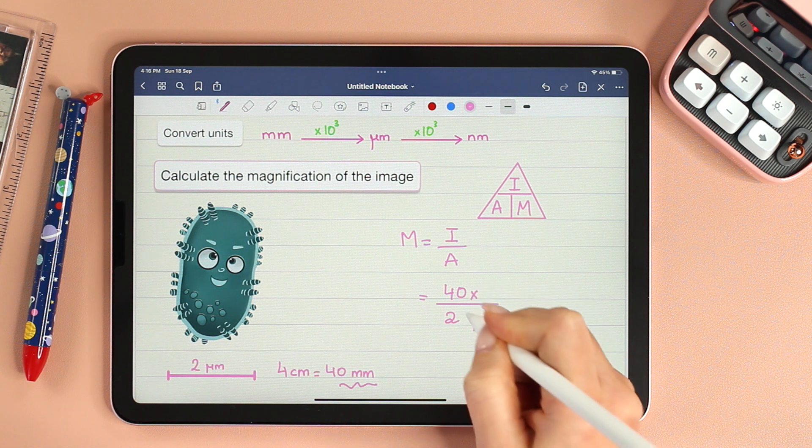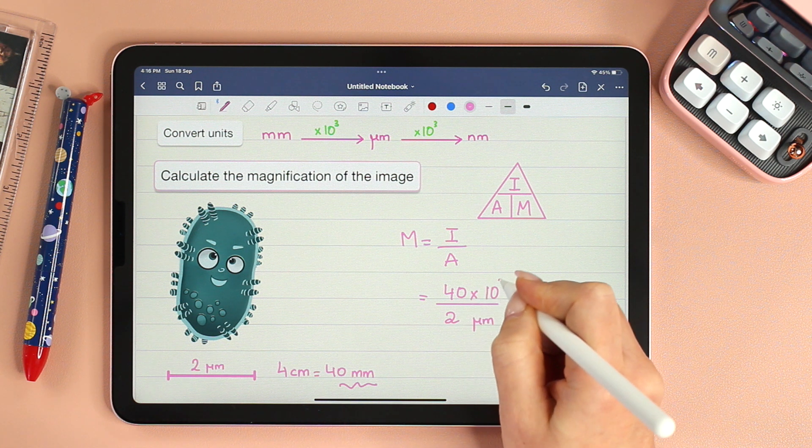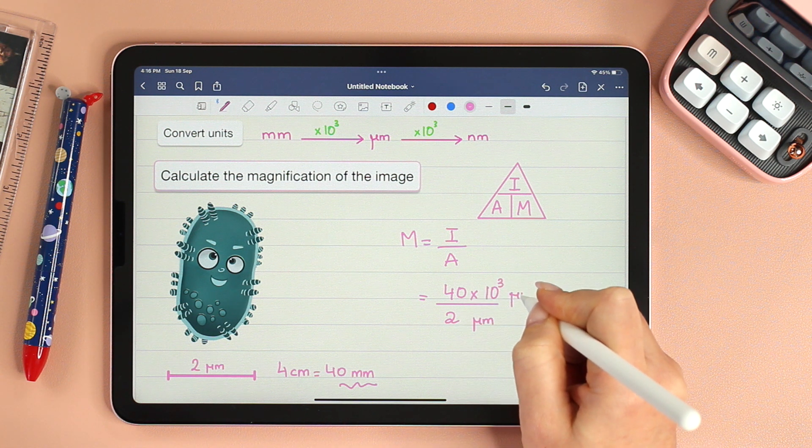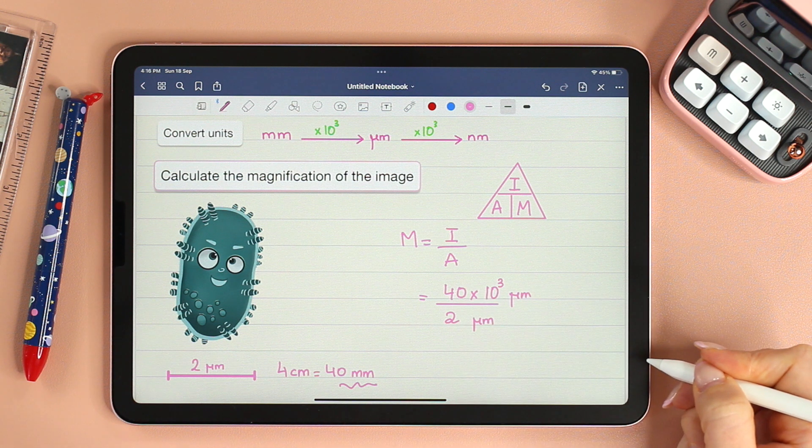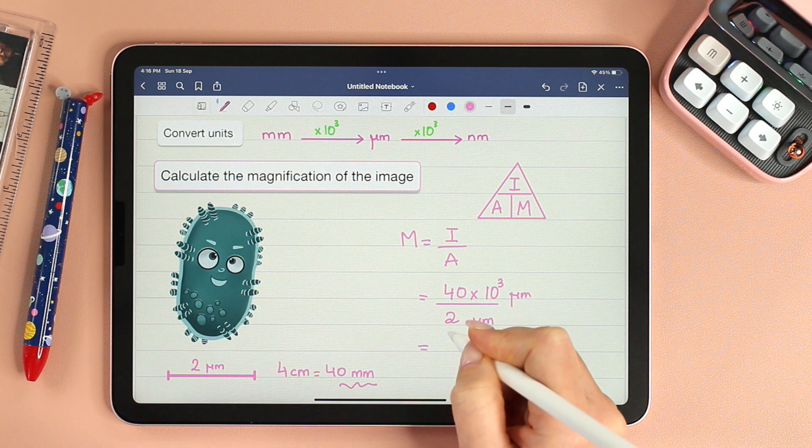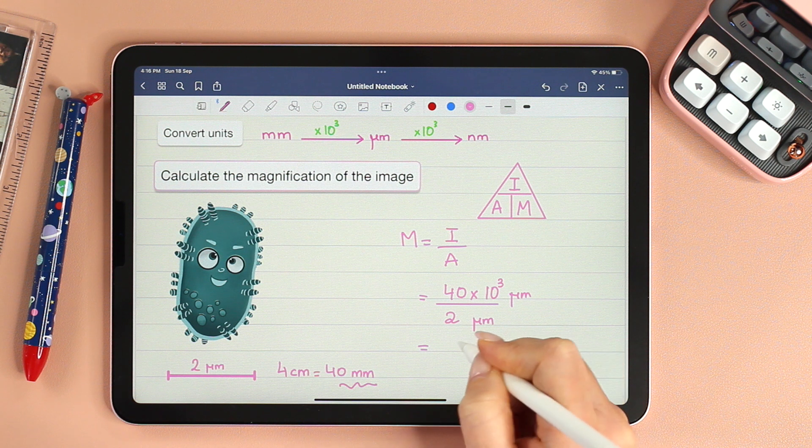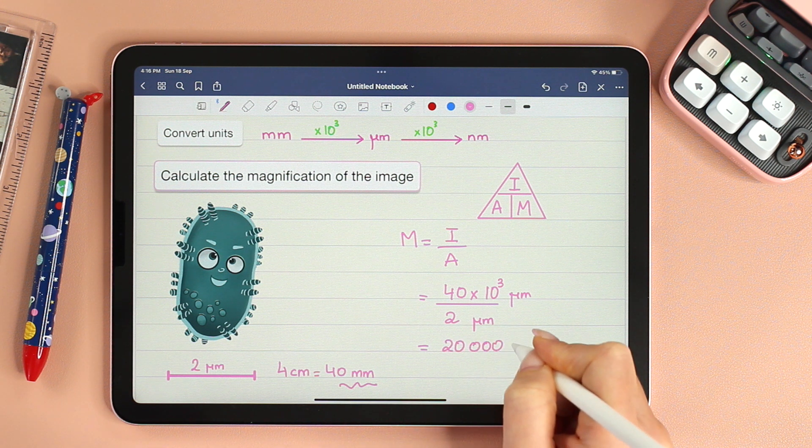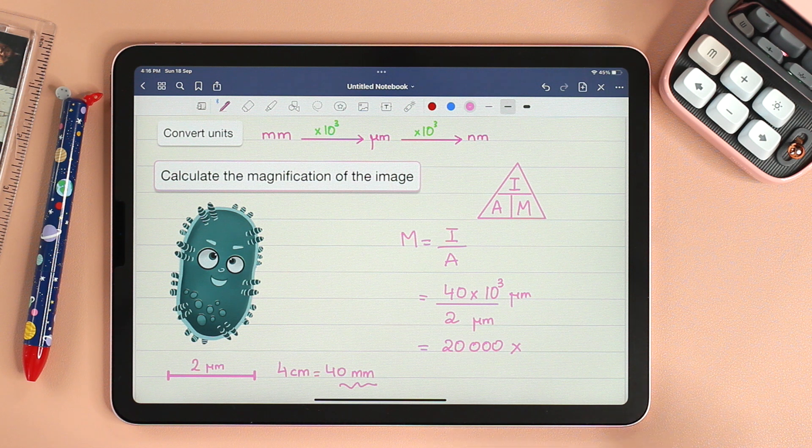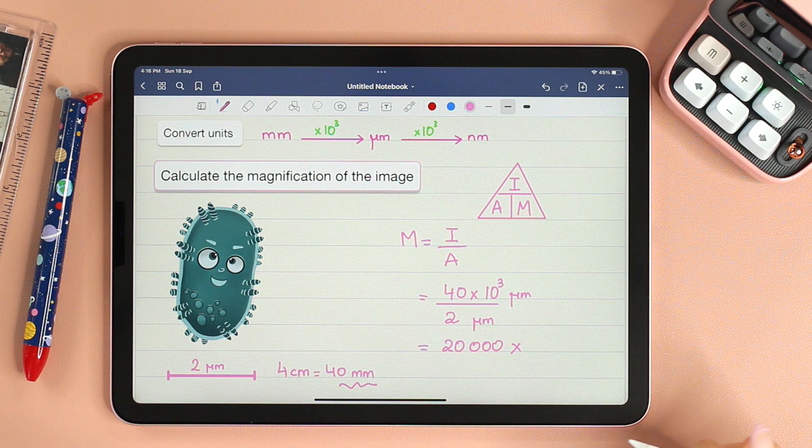So I'm going to multiply the 40 by 10 to the power of 3 so that I have the value in micrometers. Finally, divide 40,000 by 2. You will get 20,000 times magnification, and this is the answer to the question.